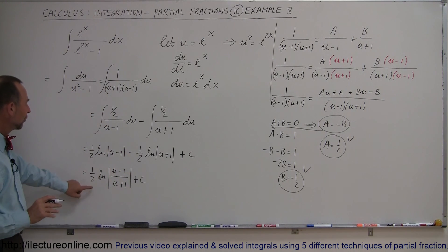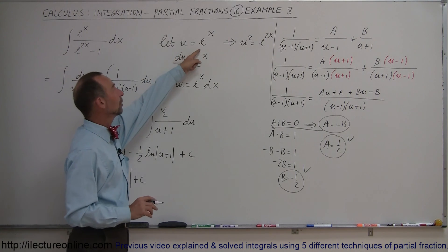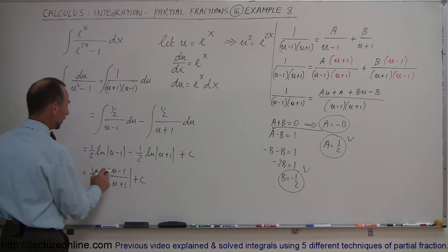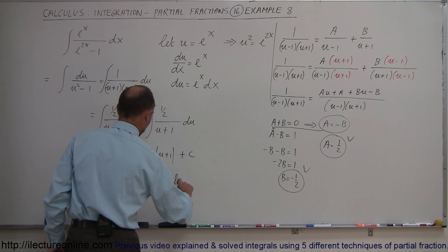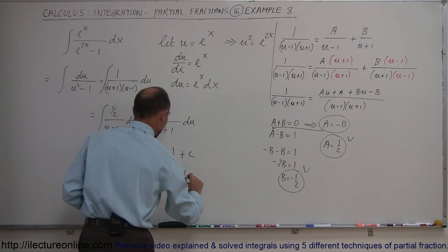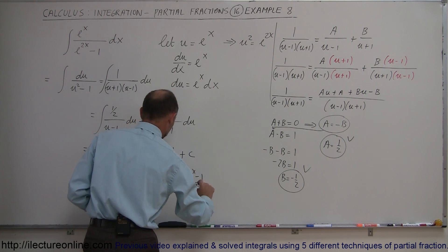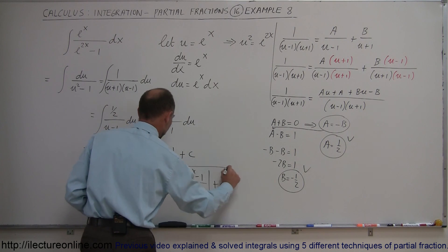We started with exponential form, and remember that u = e^x. So if I replace that back in, this equals (1/2)ln[(e^x - 1)/(e^x + 1)] + C.